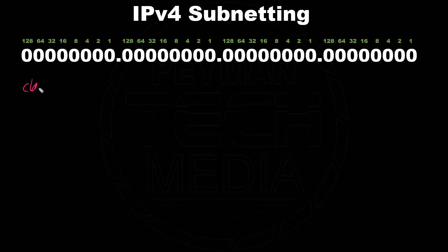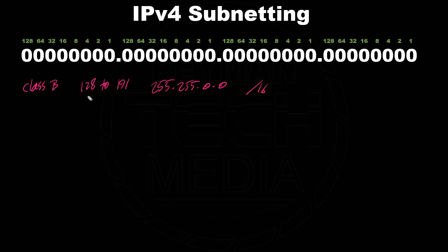Now let's go ahead and go over Class B subnetting — network bits, host bits, and what are the subnet bits. In Class B, the range goes from 128 to 191. The default subnet mask is 255.255.0.0 in decimal format, and the prefix format would be /16 for the default subnet mask Class B, which means it gives us 16 bits for the network bits and 16 bits for the host bits.